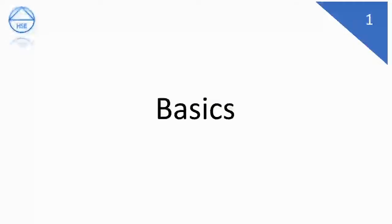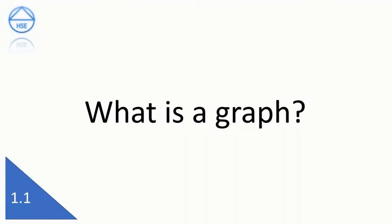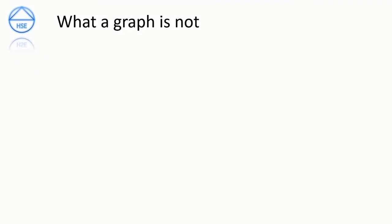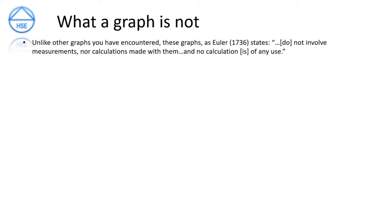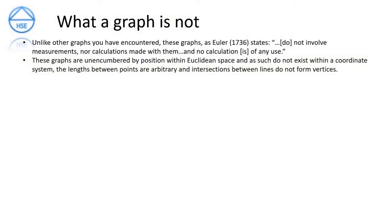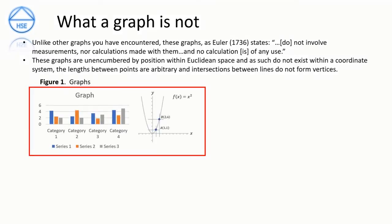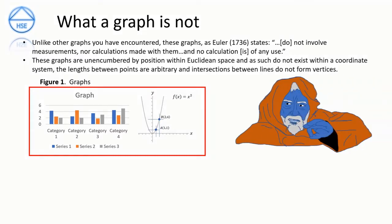Part 1.1: What is a graph? Unlike other graphs you have encountered, these graphs — as Euler states in his 1736 published article — do not involve measurements nor calculations made with them, and no calculation is of any use. These graphs are unencumbered by position within Euclidean space and do not exist within a coordinate system. The lengths between points are arbitrary and intersections between lines do not form vertices. Figure 1.1 shows some current graphs you may be thinking of — a bar graph and the graph of f(x) = x² — however, these aren't the graphs we're looking for. Three examples of the graphs we are talking about are shown below.